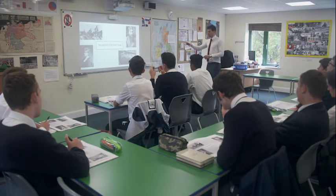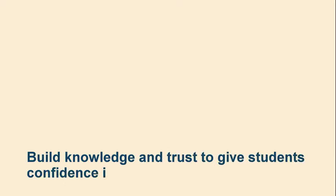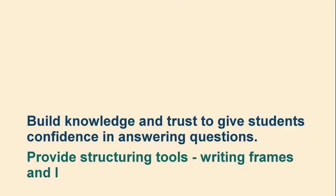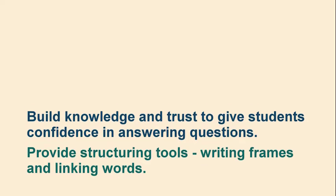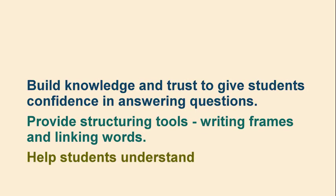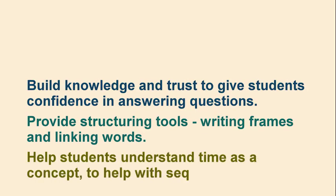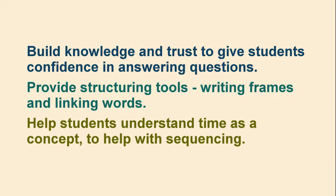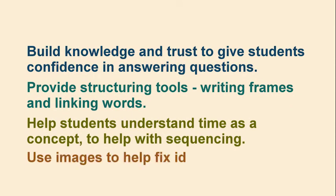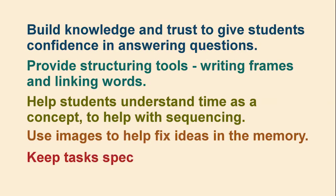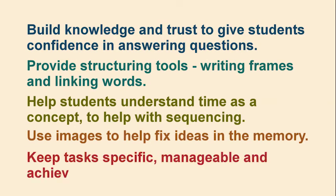To recap Lewis's main tips for teaching history: build knowledge and trust to give students confidence in answering questions; provide structuring tools, writing frames and linking words; help students understand time as a concept to help with sequencing; use images to help fix ideas in the memory; keep tasks specific, manageable and achievable.